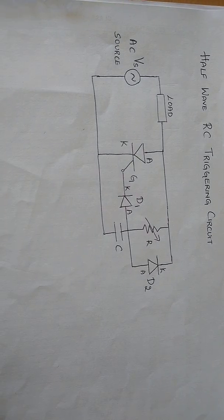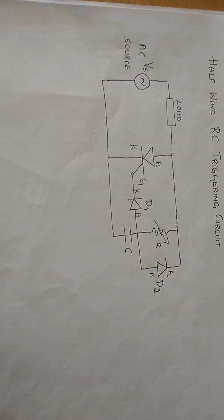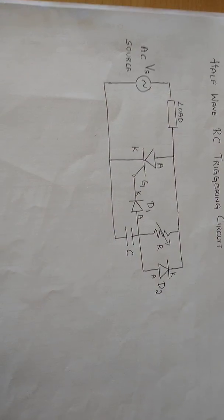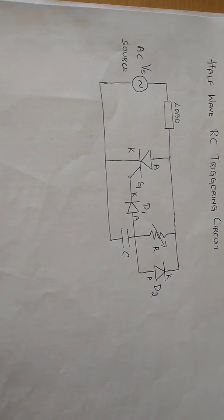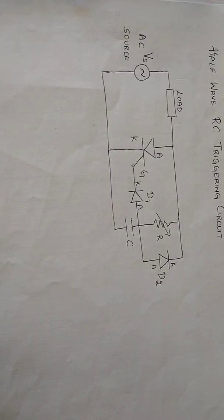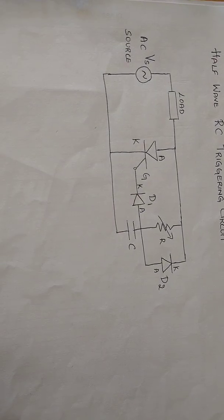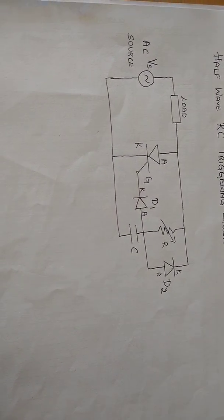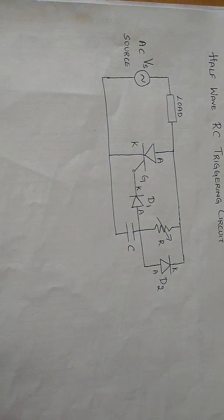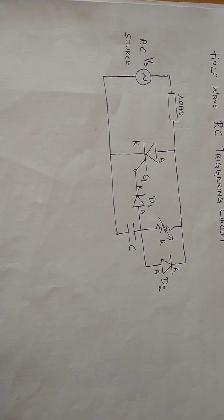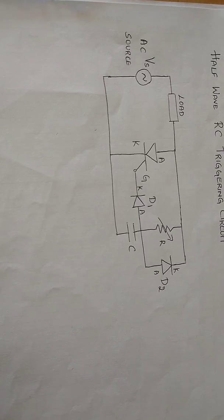By varying the value of variable resistance R, the firing angle can be controlled from 0 to 180 degree. In the positive half cycle, the capacitor is charged through the variable resistance R up to the peak value of the applied voltage. Thus, the variable resistor R controls the charging time of the capacitor.